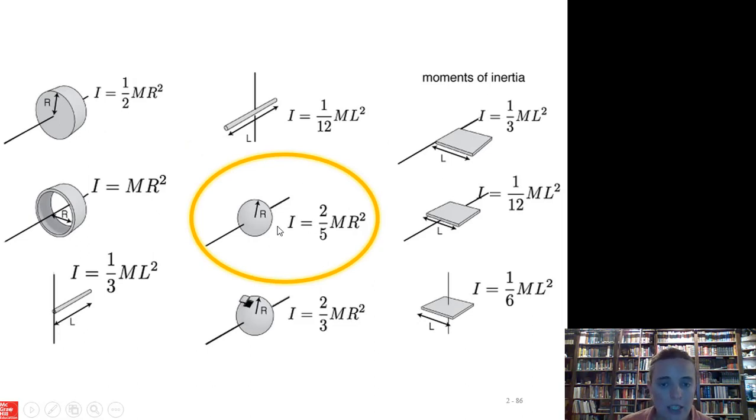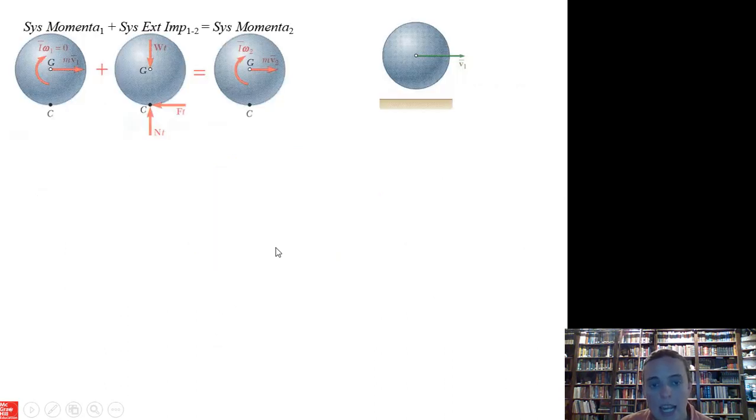For our inertia, we can look that up in a table. Be real careful. This looks like a sphere. Hollow versus solid, make sure you're grabbing the right kind of sphere on the tables.